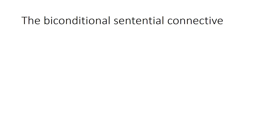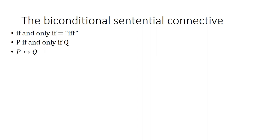Let's look at our new sentential connective, namely the biconditional sentential connective. It's the 'if and only if' connective, or IFF for short. P if and only if Q. We could symbolize it with an arrow that goes in both directions, in contrast with the conditional, which has an arrow only going one direction — for example, if P then Q. It makes a lot of sense to have the arrow going both directions with the biconditional.